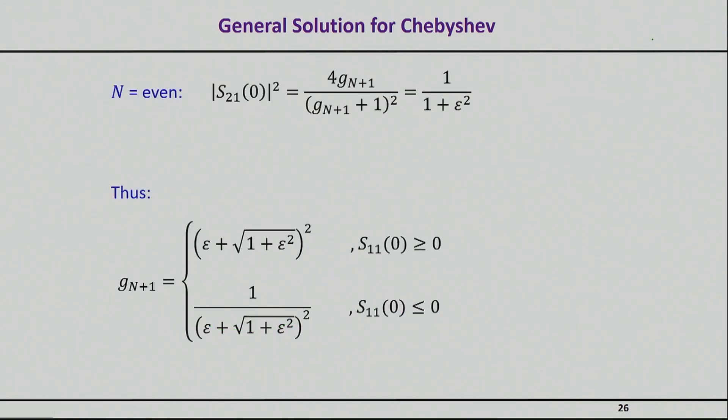But if you choose the even polynomial, then your S21 actually starts on the bottom of the ripple. And in that case, your G(n+1), which is the load impedance, is not actually equal to G0—it actually has a value that depends on the ripple epsilon.